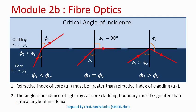For that, let us consider this diagram. In this diagram we have a boundary which separates core from cladding. Below this boundary we have the core, a denser medium having the refractive index mu1, and above this boundary we have cladding, a rarer medium having refractive index mu2. So mu1 is greater than mu2.